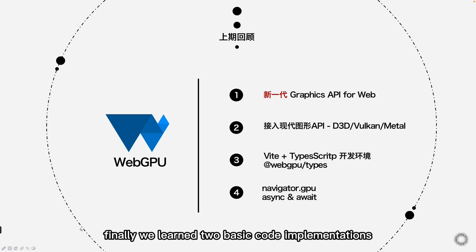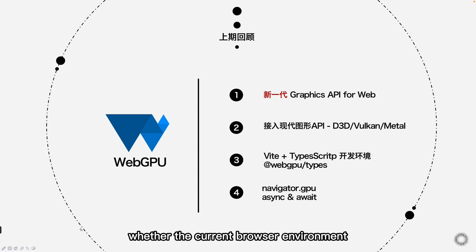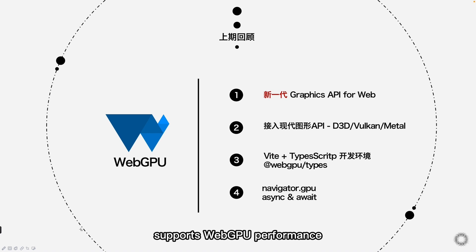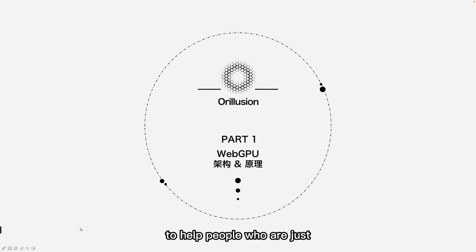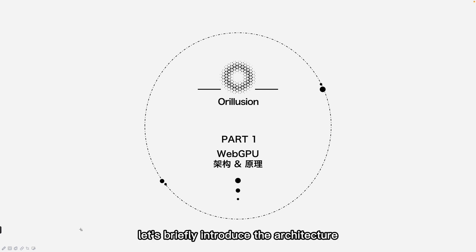Finally, we learned two basic code implementations. One is to use the Navigator GPU field to detect whether the current browser environment supports WebGPU, and also how to use async and await. To help people who are just getting started to learn WebGPU, let's briefly introduce the architecture principle of WebGPU.